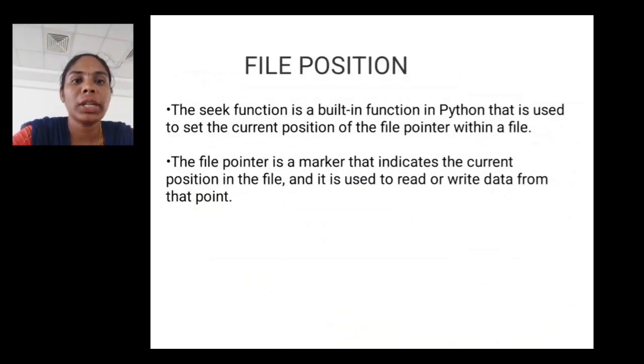File position. The seek function is a built-in function in Python that is used to set the current position for the pointer within a file. The file pointer is a marker that indicates the current position in the file and it is used to read or write data from that point.